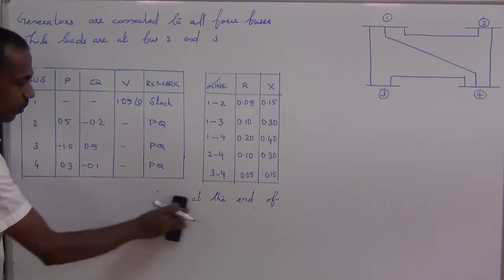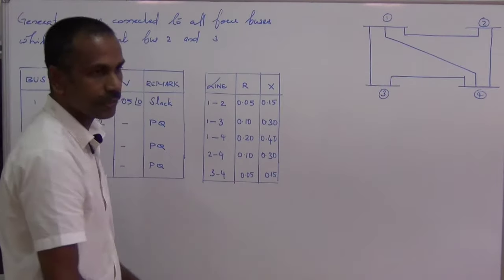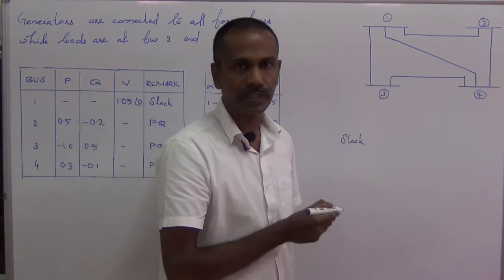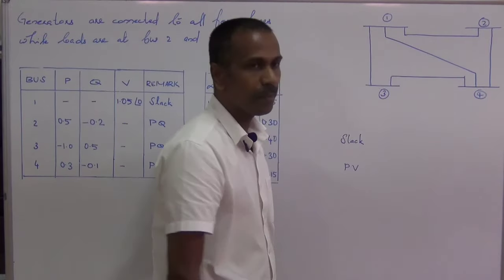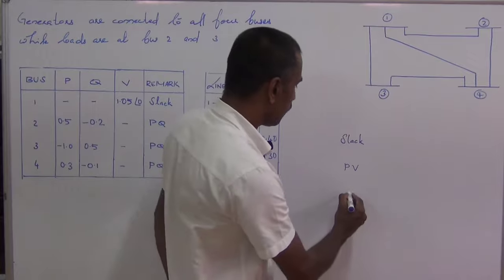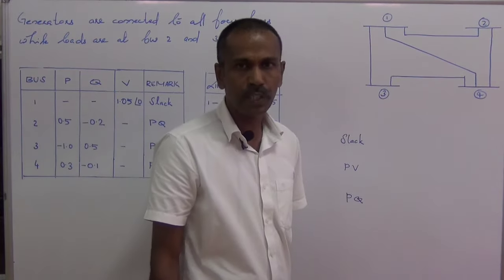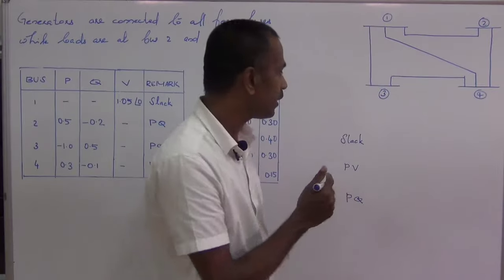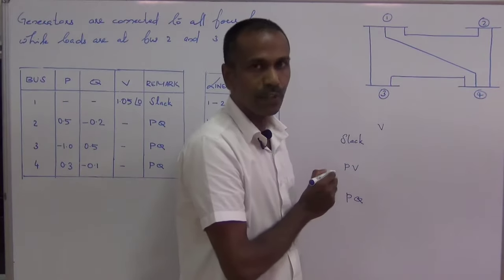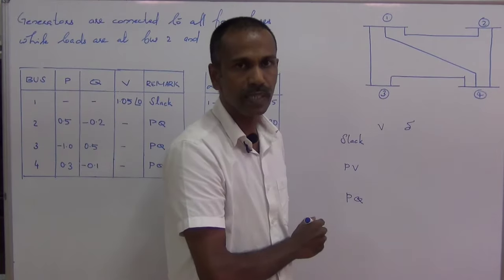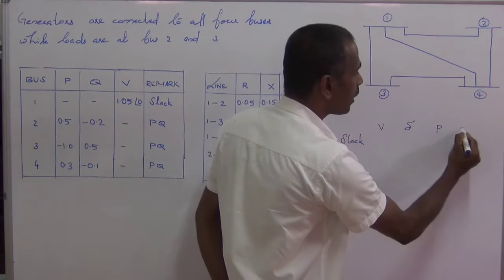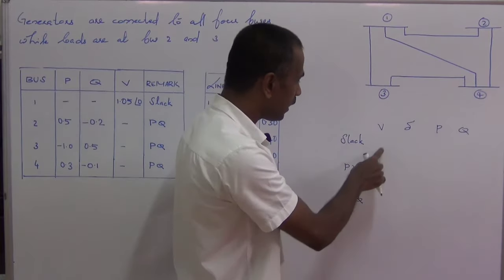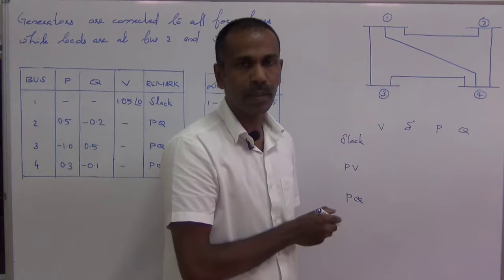There are three types of buses in the power system networks. The first one is the slack bus or the reference bus. The second one is the PV bus or the generator bus. The third one is the PQ bus or the load bus. There are mainly four parameters which we deal with in load flow analysis: the magnitude of the bus voltage, angle of the bus voltage delta, active power P and the reactive power Q. Out of the four parameters, two parameters will be specified at each bus, and the remaining two we have to find out.